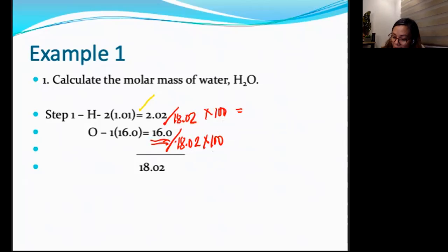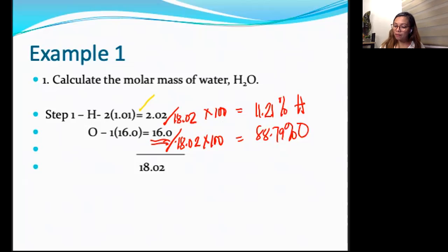For hydrogen, 11.21% of hydrogen. Here, 88.79% of oxygen. So, water is composed of 11.21% hydrogen and 88.79% oxygen. You're going to get the summation of these two. You will have or you will get 100%. That is to check if the components are correct. One way of checking.